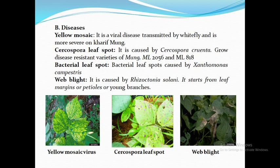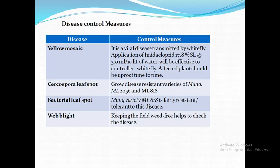Disease Control Measures: For yellow mosaic disease — intercrop with non-host crops like sorghum, pearl millet, and maize. Control whitefly by spraying imidacloprid or acetamiprid. Infected plants should be removed and host weeds destroyed. Grow disease-resistant varieties such as ML 818. For Cercospora leaf spot and bacterial leaf blight — remove and destroy infected debris from soil, avoid growing fresh crops in infected fields. Treat seeds with Thiram or Captan at 2–3 g per kg. Spray Dithane M-45 at 2 kg in 1000 liters of water per hectare. Grow resistant varieties such as ML 2056 and ML 818.